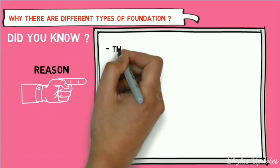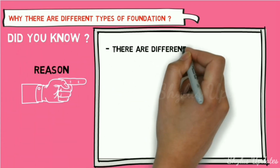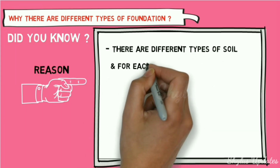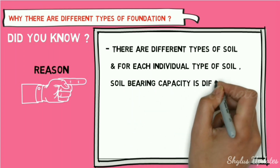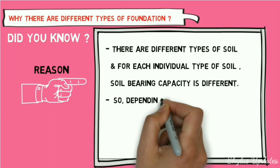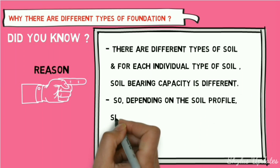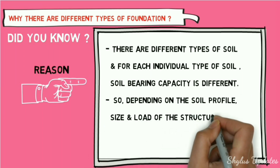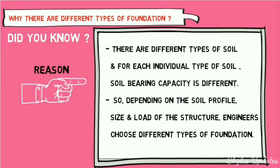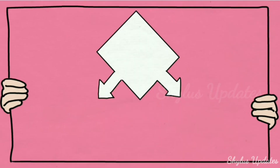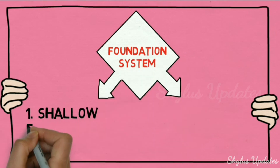Why are there different types of foundation? Because there are different types of soil, and for each individual type of soil the bearing capacity is different. So depending on the soil profile, size, and load of the structure, engineers choose different types of foundation.